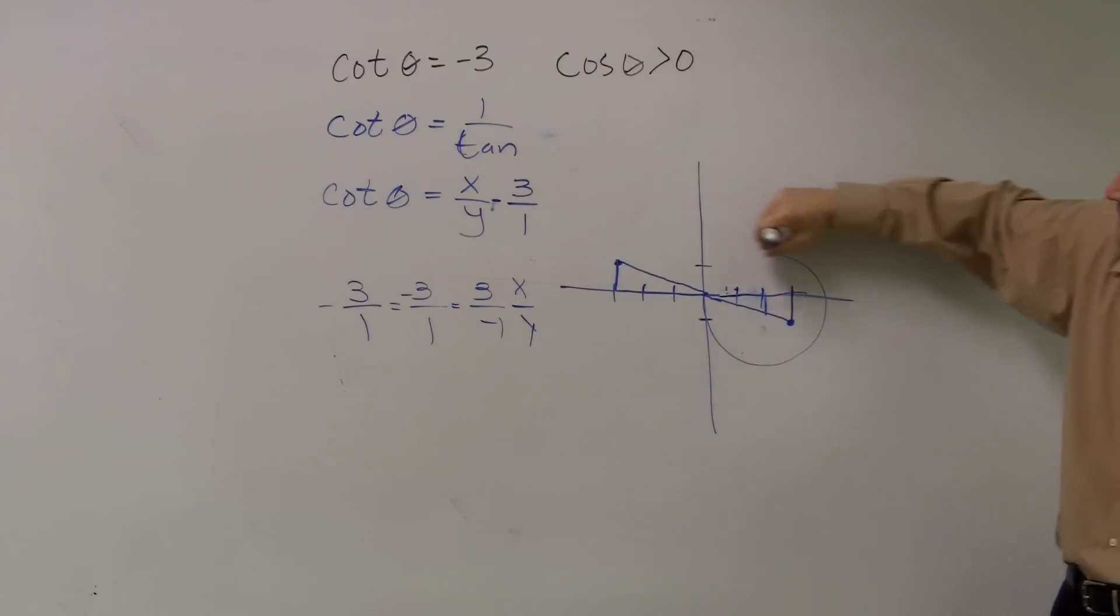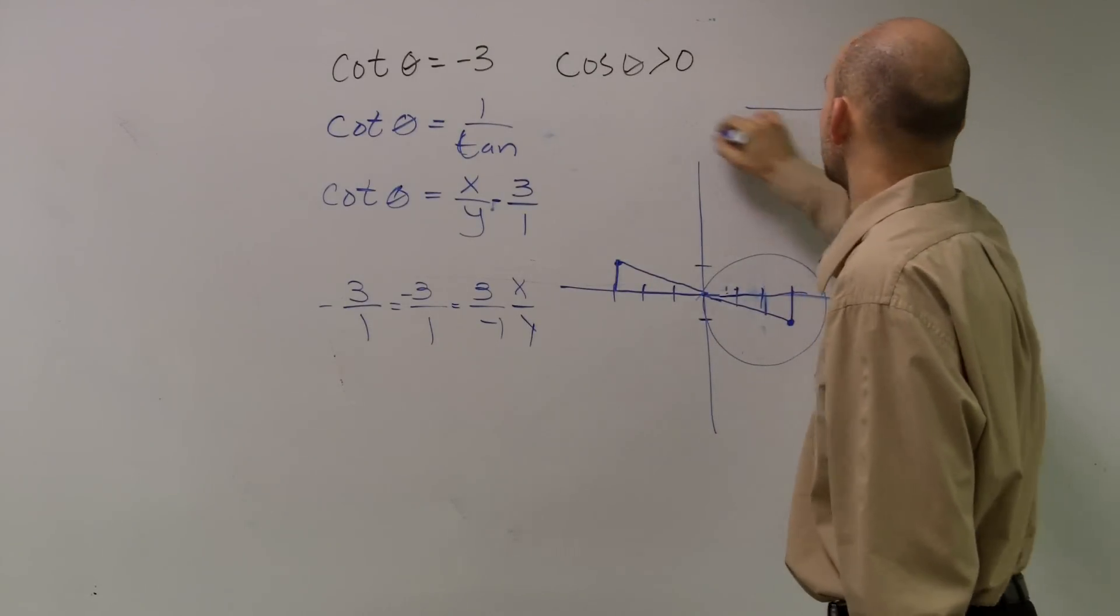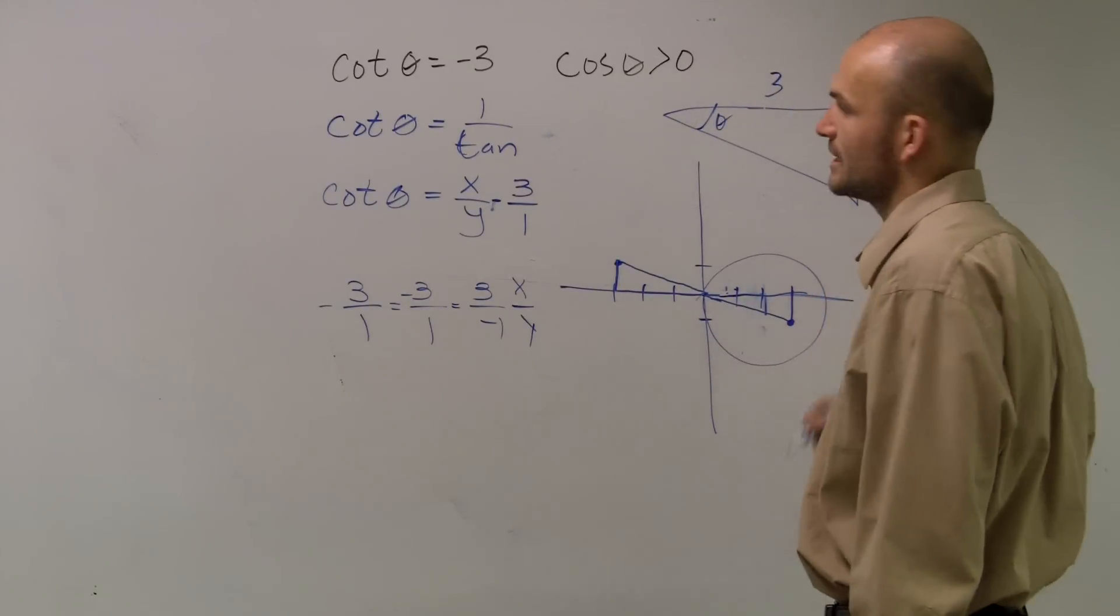So therefore, this is going to be the triangle I'm going to use. So I'll redraw this triangle. I'll say that's my theta. That's 3, negative 1.